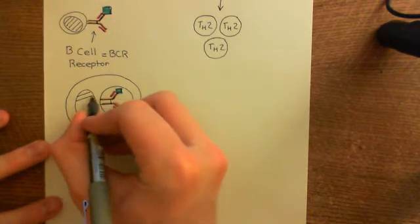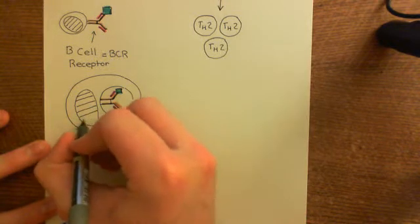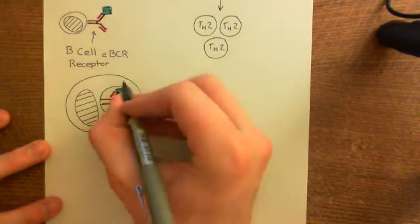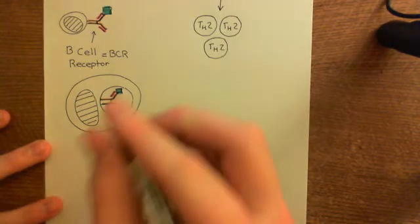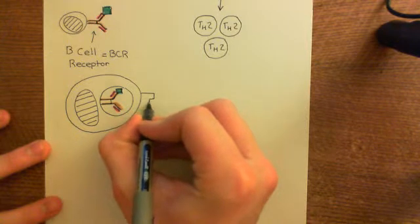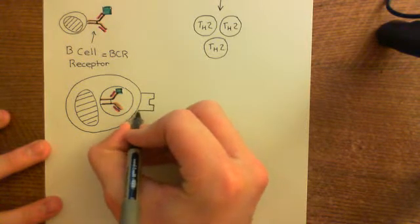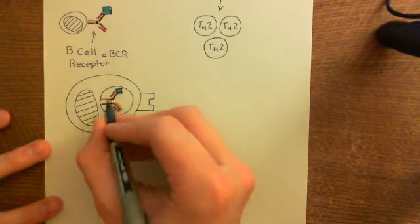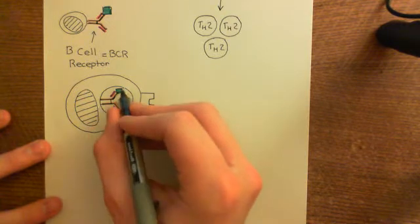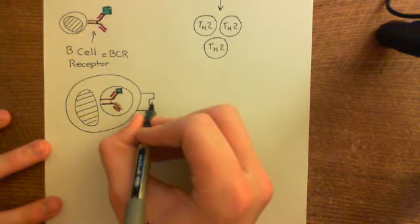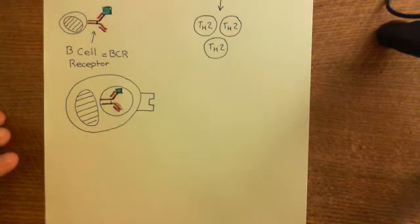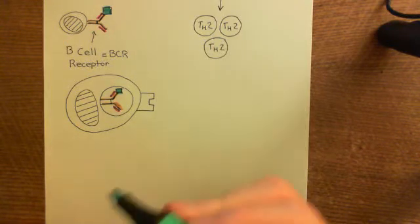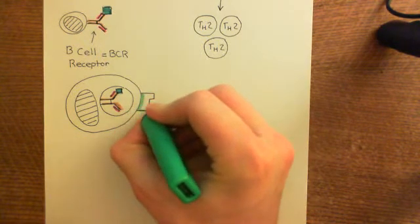This is still a naive B-cell at the moment — it has never been activated before. It's basically got in this endocytic vesicle an antigen to break down, and it's going to break down that antigen, process it, and put fragments of that antigen on its surface on MHC class 2. Anything engulfed by a cell is put on MHC class 2, whereas things in the cytoplasm are put on MHC class 1, which we'll see when we do the cytoplasmic cell-mediated response.